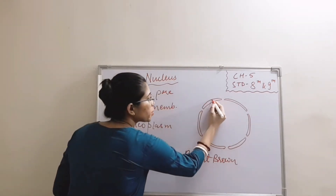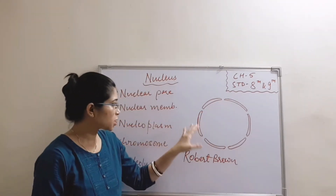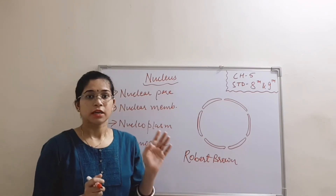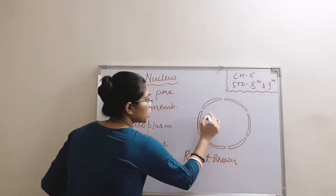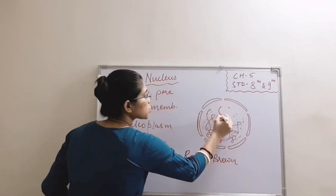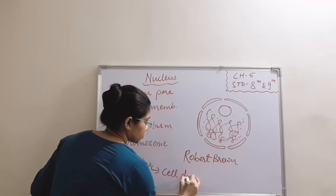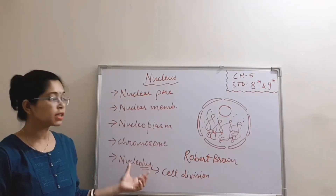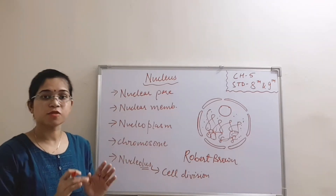The nuclear membrane is the outer membrane present outside the nucleus. It helps in controlling the shape of the nucleus and also in protecting the nucleus from the outside environment. Nucleoplasm is the jelly-like substance present inside the nucleus. Nucleolus is the round structure present inside the nucleus and helps in cell division. We should never confuse these two terms: nucleolus is present inside the nucleus, and nucleus is present inside the cell.